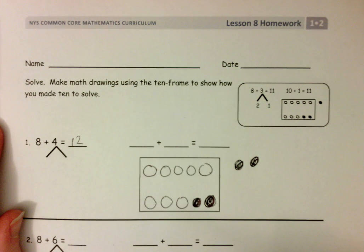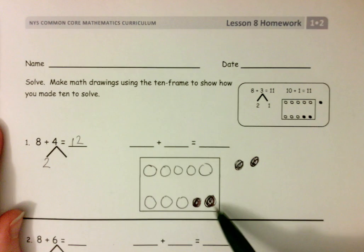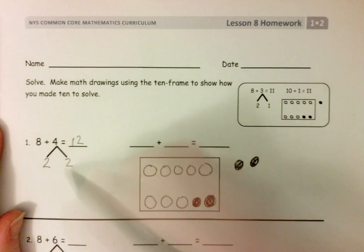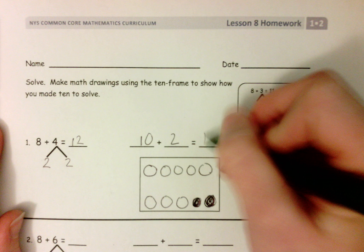And then go back for right now, if that's easier for them to say, okay, how do we make 10? We used 2 from our 4 to make 10 and we had 2 more. So we ended up with the same as 10 plus 2 equals 12.